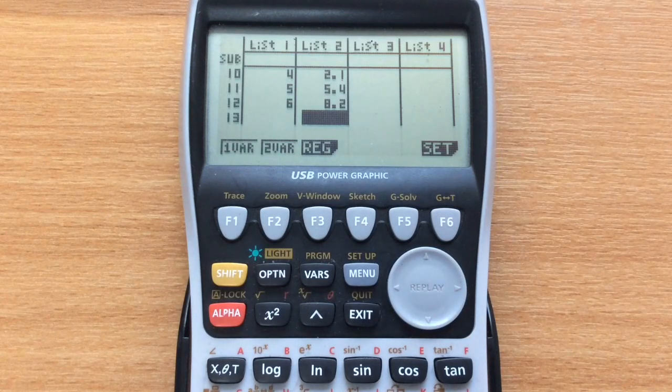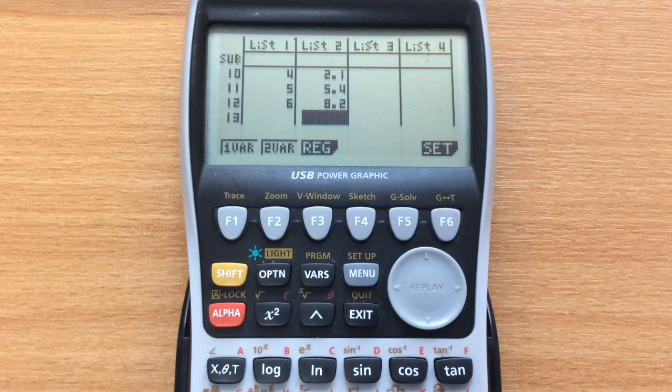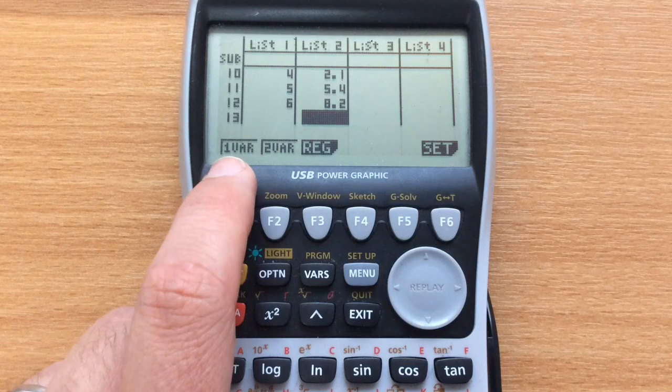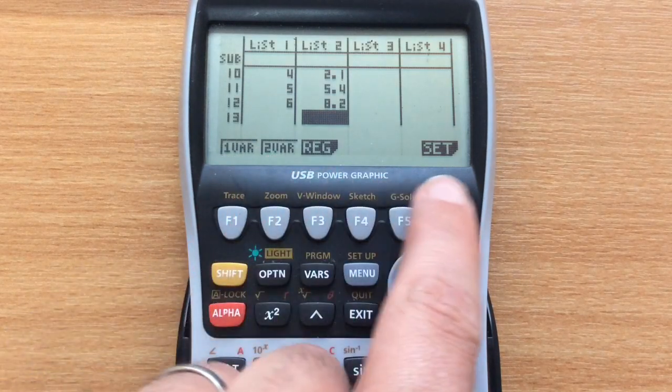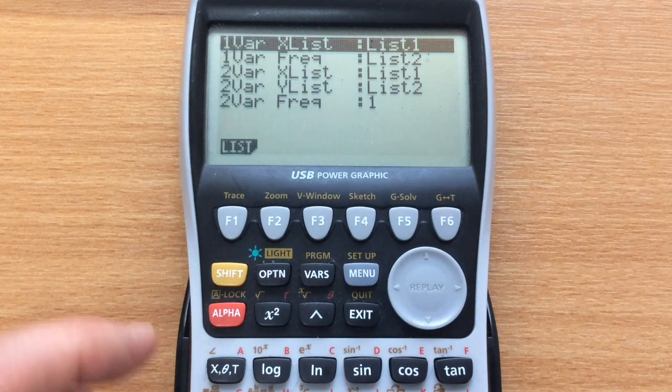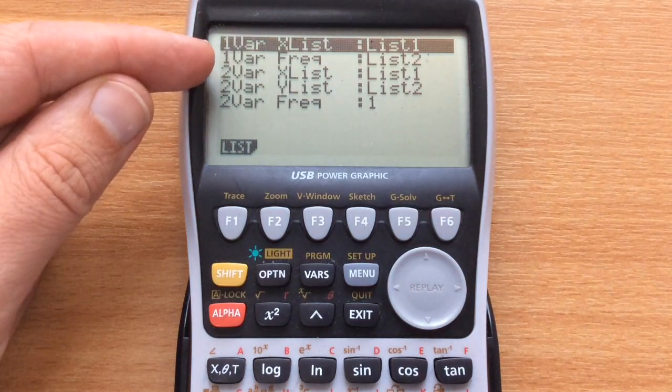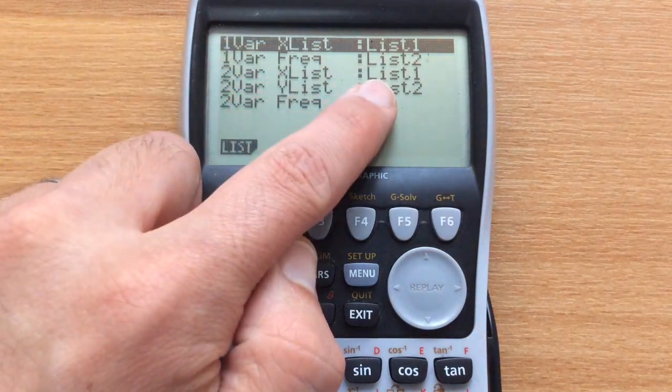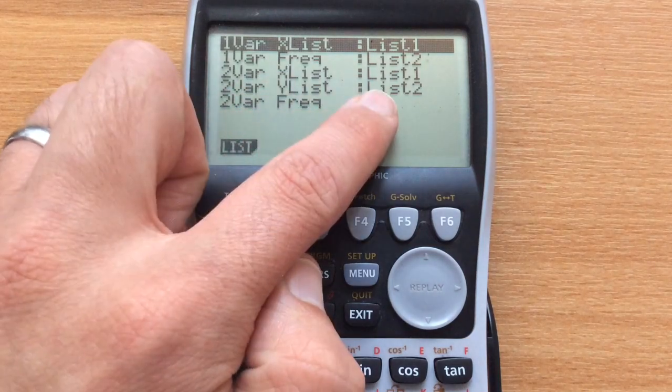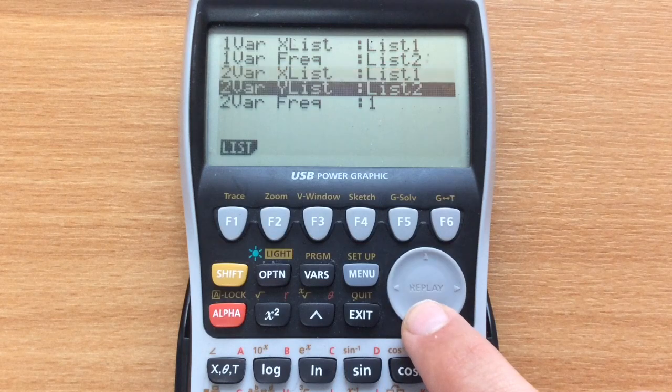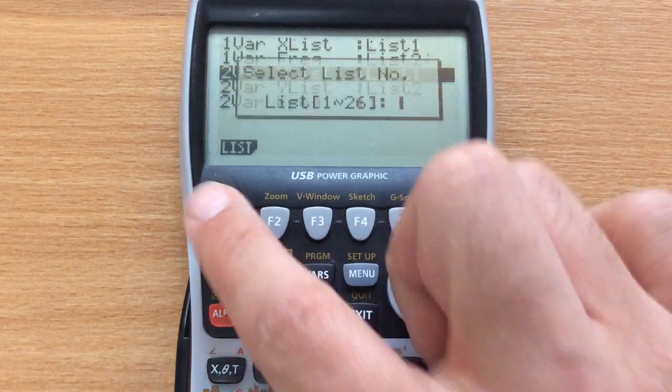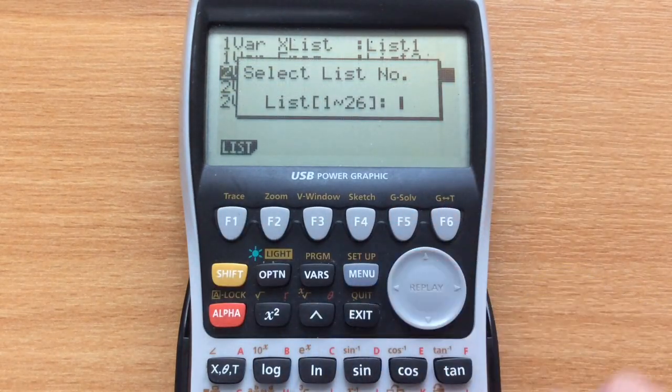If we wanted to do calculations about the mean or standard deviation or whatever that might be, we would do some combination of one variable or two variables depending on what we wanted. We're going to pop into the settings and check. Here we're looking at two variables to make sure it's taking the X values from list 1 and the Y values from list 2. If they weren't, we would move the arrows down to the part we wanted and press list to change it to whichever list we want.